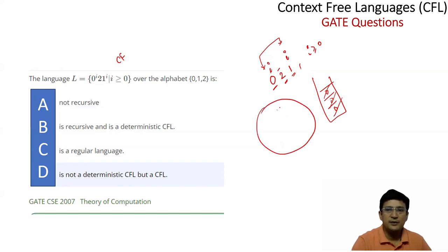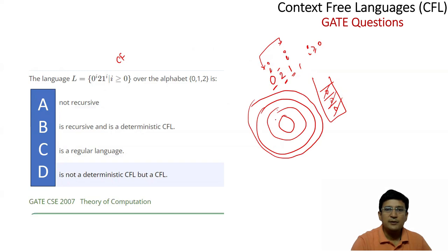If a language is context-free, then by the Chomsky hierarchy it is necessarily recursive or recursively enumerable. So the statement that it is not recursive is wrong. The correct statement is: it is recursive and is a deterministic context-free language (DCFL).